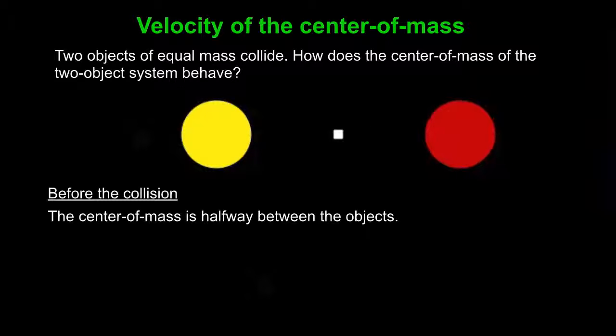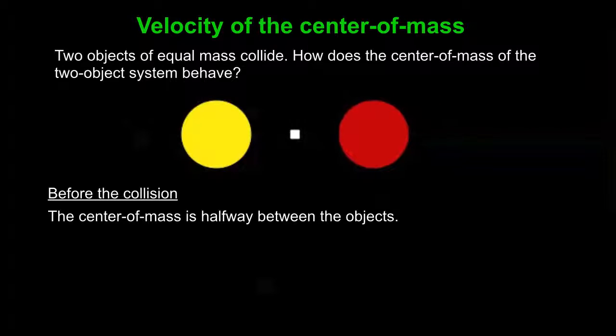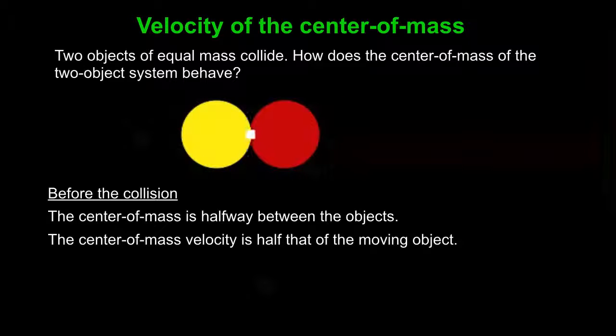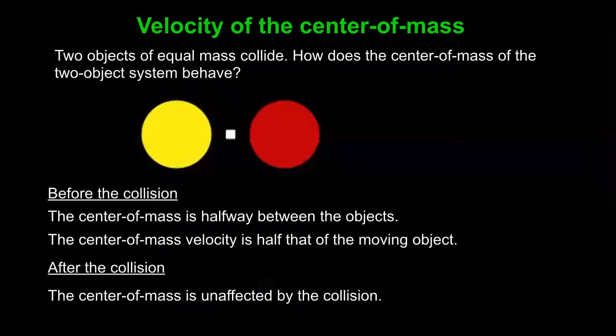Now something weird just happened. The red object collided with the wall and center of mass velocity changed. Okay, so the center of mass velocity is half of the moving object both before and after the collision, until there's an external force which changed the direction of the red object.